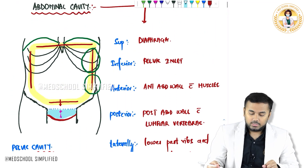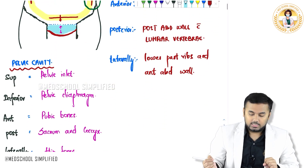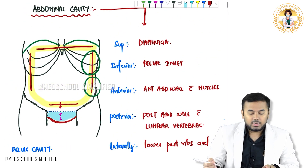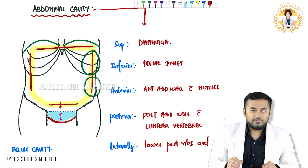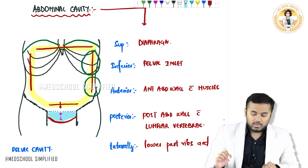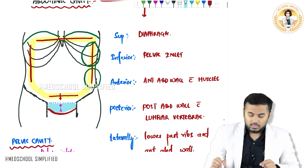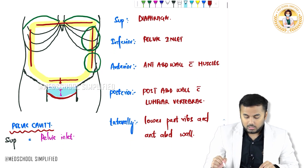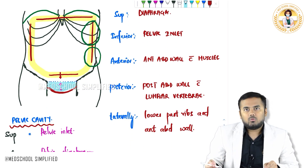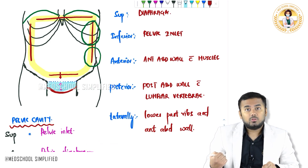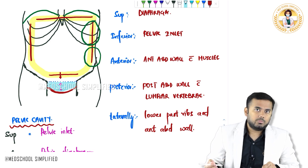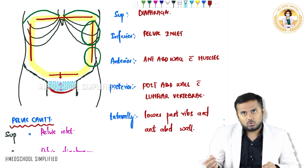These are the structures located in the abdominal cavity and pelvic cavity. So in the abdominal cavity — on the top you have got the diaphragm, inferiorly we have got the pelvic inlet. Anteriorly, the anterior abdominal wall and muscles — there are no vertebra on the anterior side. Posteriorly you have got the lumbar vertebra along with posterior abdominal muscles.